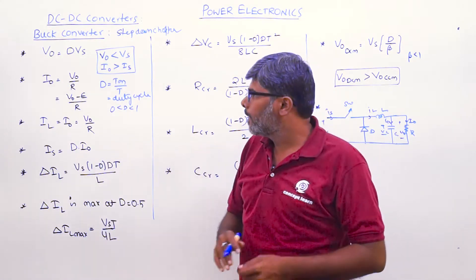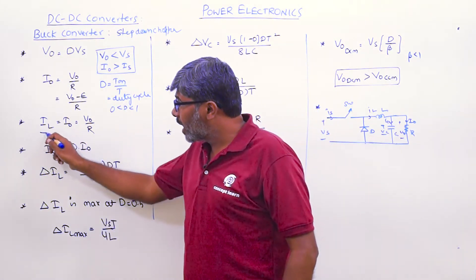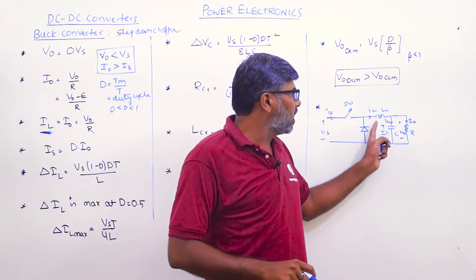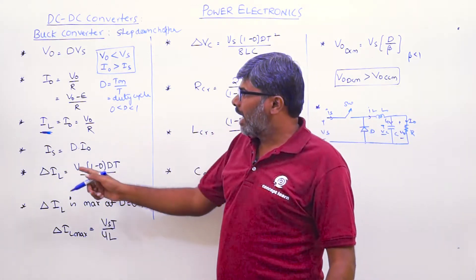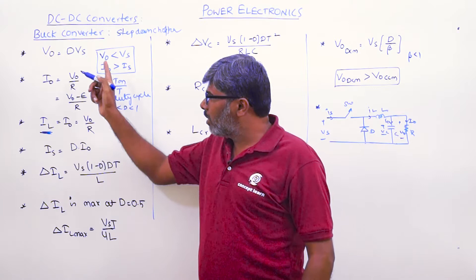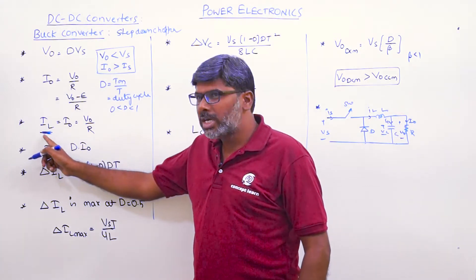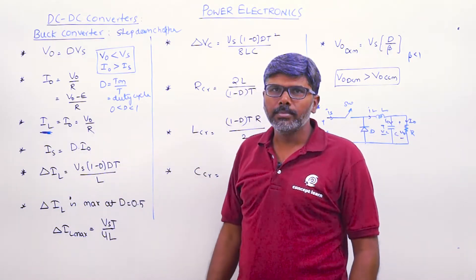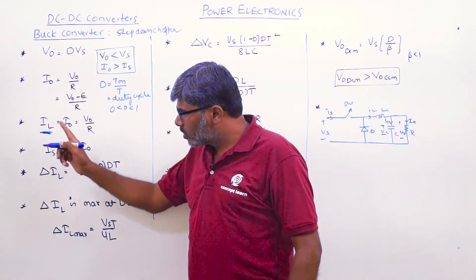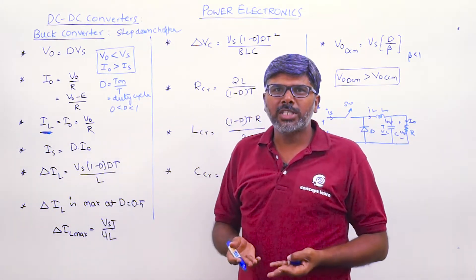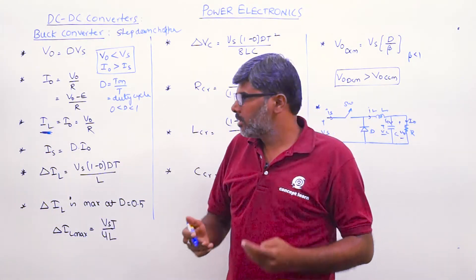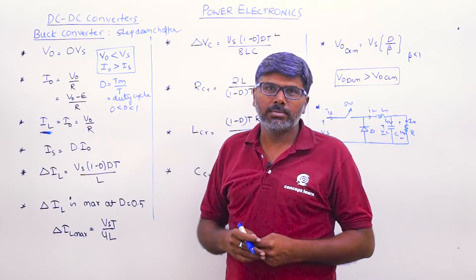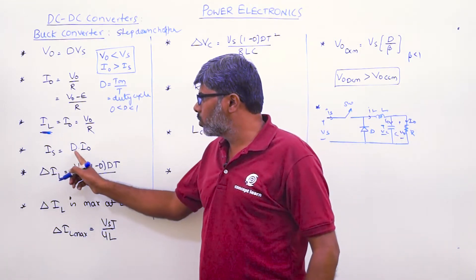The inductor current IL is distinct from the load current. In the buck converter, the average inductor current equals the average load current, which is V0/R. The source average current Is equals D times the average load current — that is, Is = D × I0.